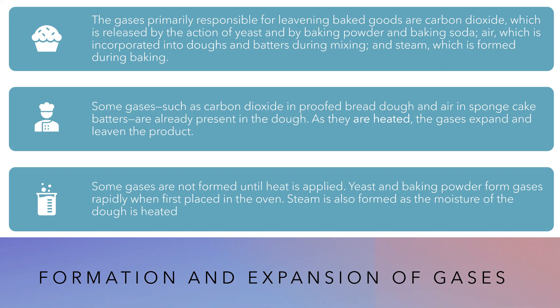Some of these gases, like carbon dioxide, are present in proofed bread dough as well as in sponge cakes and batters because of mixing. As these are heated, the gases expand and leaven the product further. Some gases are not formed until heat is applied — yeast and baking powder form gases rapidly when first placed in the oven, but steam is formed as the moisture of the dough is heated.